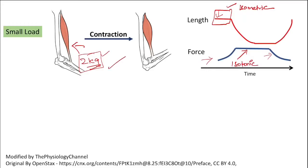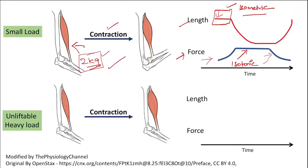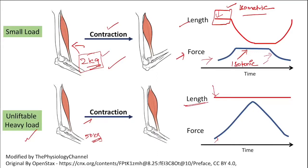Most contractions have both an isometric phase and an isotonic phase, and both force production and shortening are called contraction. Only in certain conditions — like lifting an unliftable load of 50 kg — is there force production without any change in muscle length. This type of contraction is called purely isometric contraction, whereas most contractions involve both isometric and isotonic phases.